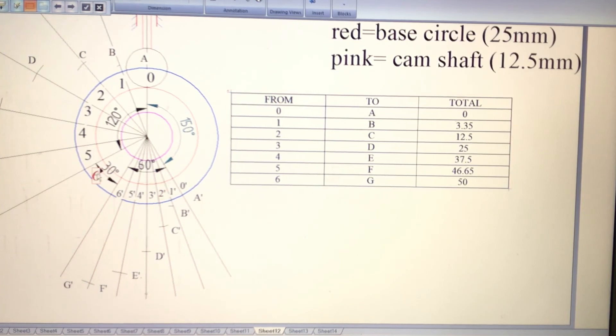Likewise, 6 to G is 50, equal to stroke length. And then for angle of return, it is in reverse order: 6 dash to G dash is 50, 5 dash to F dash is 46.65, because both are having simple harmonic motion. Complete this likewise.